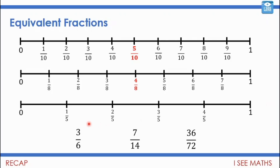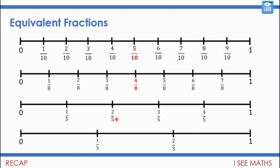Here are some fractions that are a half: three-sixths is a half, seven-fourteenths is a half, and thirty-six out of seventy-two is a half. Because three is half of six, seven is half of fourteen, and thirty-six is half of seventy-two — so all these fractions are equivalent. What about fifths? We don't have a half in fifths because five is an odd number. To be halfway we'd need two-and-a-half fifths, but we never have decimals in the numerator. So when the denominator is an odd number, there is no equivalent fraction for a half.